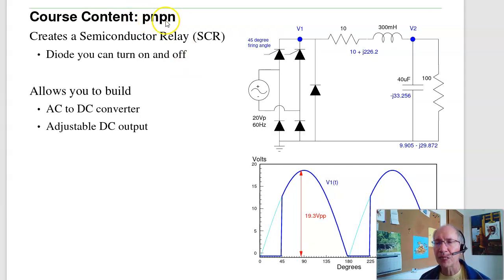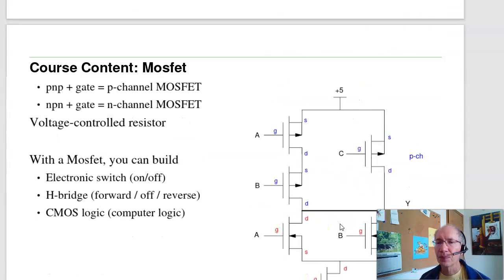If I stick four of those types of materials, P-type and N-type, back-to-back, I get a semiconductor relay. A semiconductor relay is a diode I can turn on and off. So rather than just doing a full-bridge rectifier, I can do a full-bridge rectifier that turns on at 45 degrees. By changing the on time, I can change the average of the DC voltage. So this builds an AC-to-DC converter, where I have an adjustable DC output.